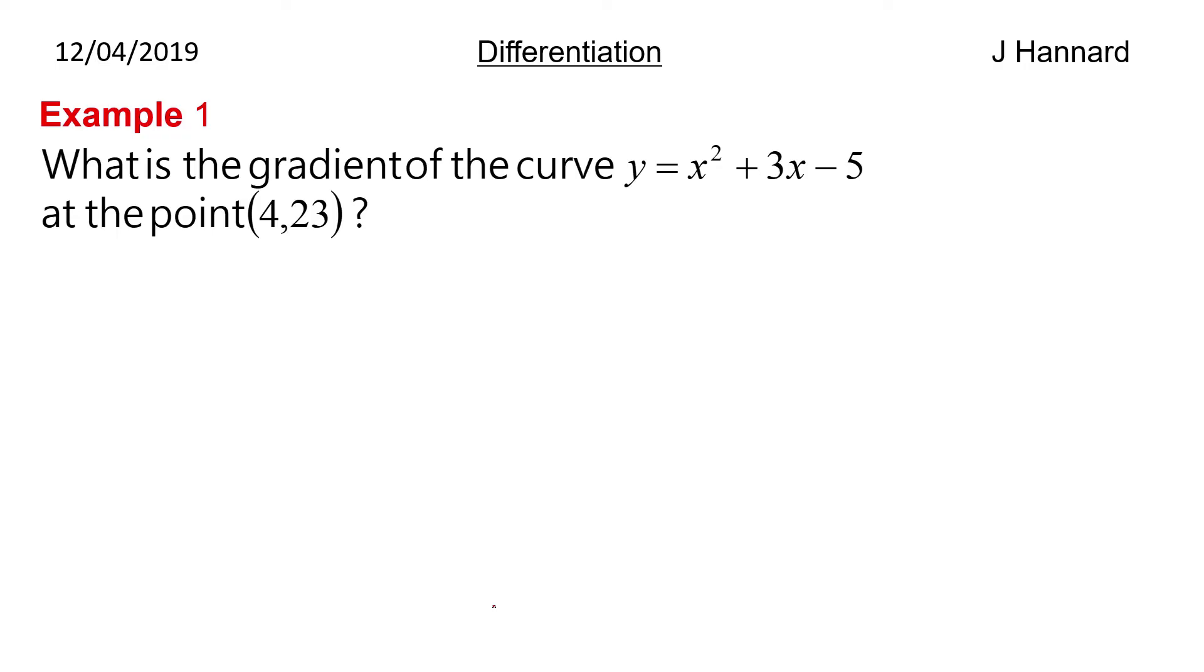So example 1 then. What is the gradient of the curve y equals x squared plus 3x minus 5 at the point (4,23)? So first of all we start with our function. And then we know that we have to find dy by dx. So what is dy by dx? Bring the power to the front, knock 1 off the power. So we do that to each of the terms. So we get 2x and we get 3 and we get minus 0, which is nothing so we don't worry about it. So dy by dx equals 2x plus 3. We've been given a point (4,23). So we know what x is. So we can work out what dy by dx is and that is going to be the gradient. So we substitute in the 4. We get the gradient equals 2 times 4 plus 3 which is 11. So the gradient of that curve at the point (4,23) is 11.